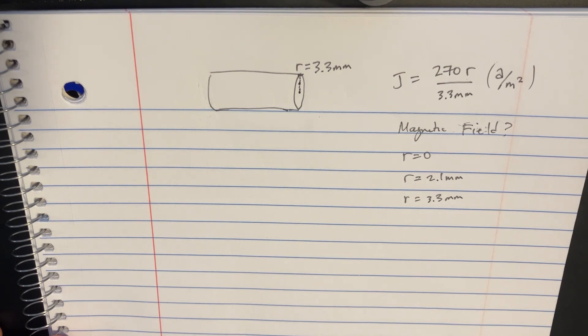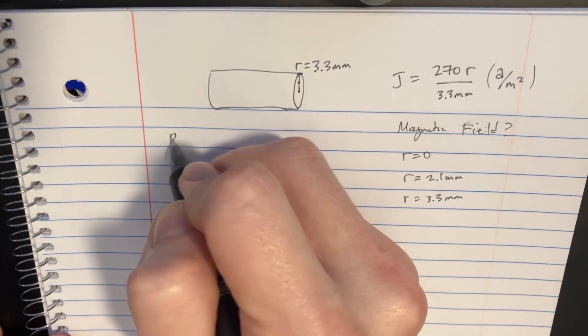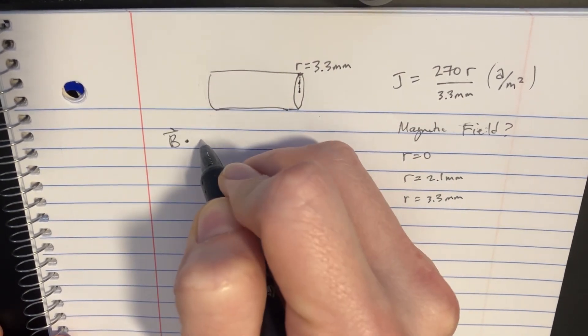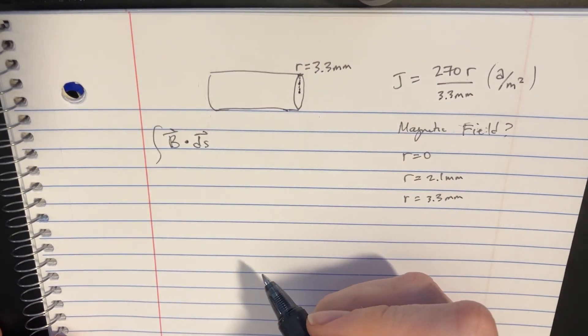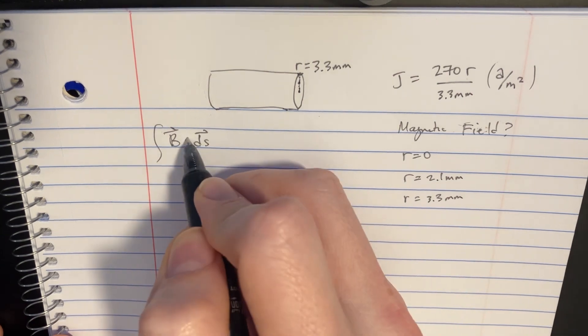In order to do that, let's try to figure out the B ds integral. And that is a dot product right there.